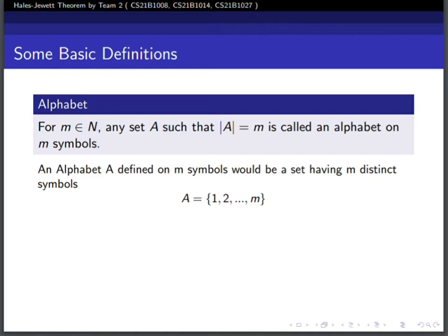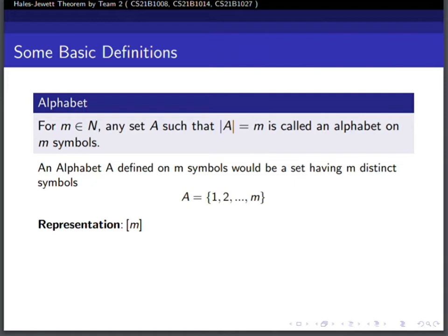Before we go into the proof, let me introduce some basic definitions. In formal language theory, an alphabet is defined as a non-empty set of m distinct elements. If the alphabet is defined on m symbols, then A is a set having elements from 1 to m. Alphabet A can be represented by writing m inside square brackets.